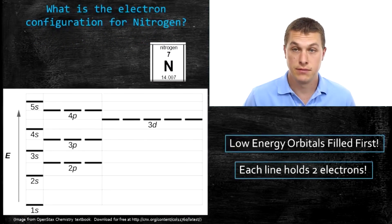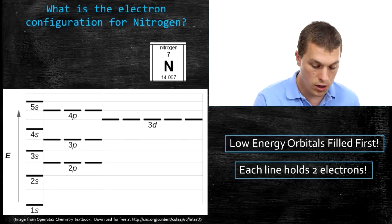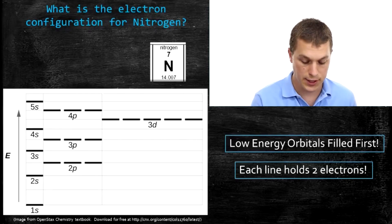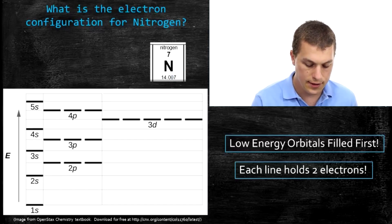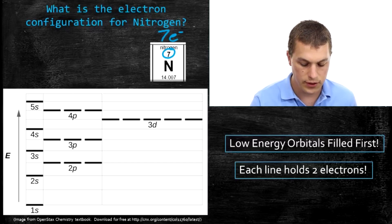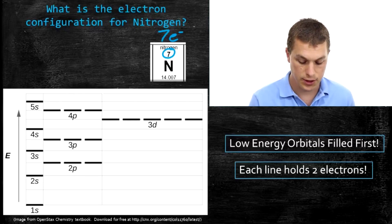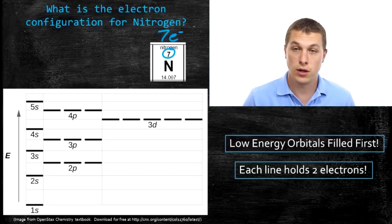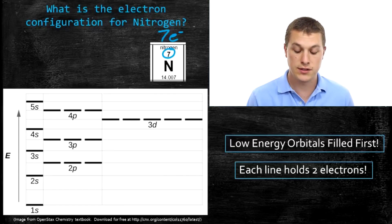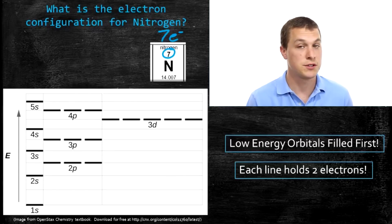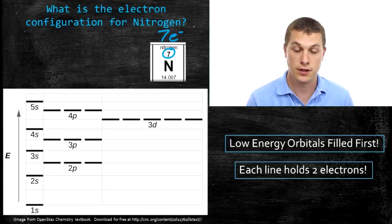Let's say we want to find where the electrons go for nitrogen. The first thing to ask is: how many electrons does nitrogen have? Looking at nitrogen on the periodic table, it has seven electrons, so we need to put a total of seven electrons into these orbitals. We're going to represent electrons with arrows — an up arrow represents one electron, a down arrow represents another. Each line on this chart holds two electrons: one spin up and one spin down.